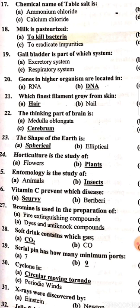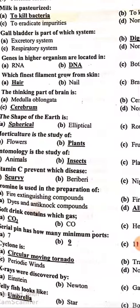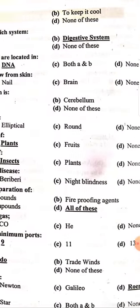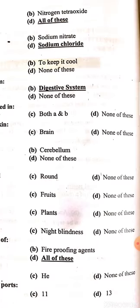A serial port is used in networking. A cyclone is a circular moving tornado. X-rays were discovered by Wilhelm Röntgen. A jellyfish looks like an umbrella.